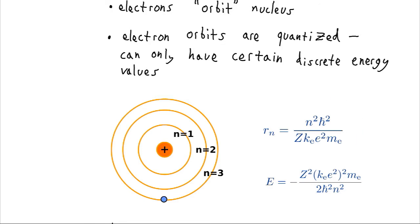We have our N, which is some integer times h-bar squared divided by the charge of the nucleus divided by that Coulomb constant and the charge on the electron squared and the mass of the electron. And so N is the thing that can vary here and it can be any integer.